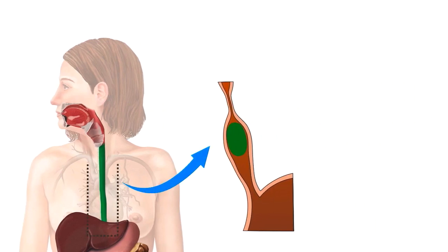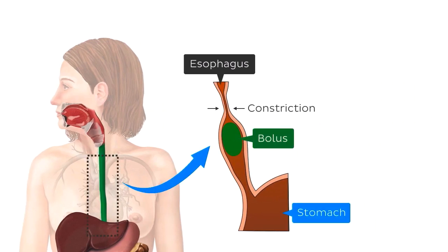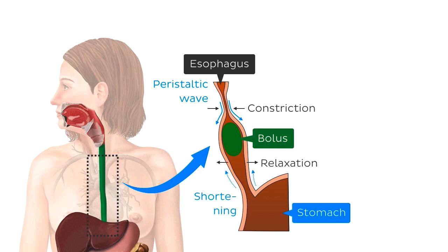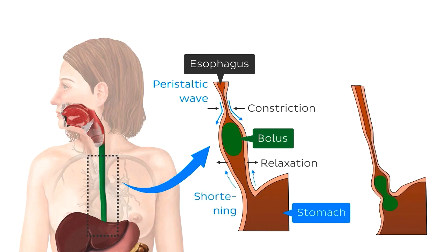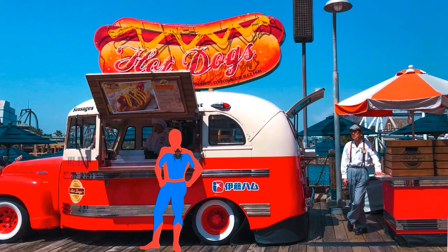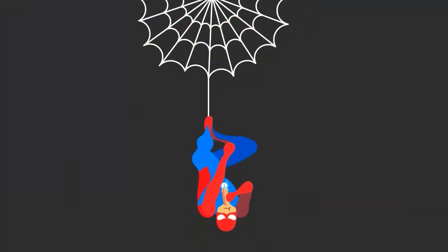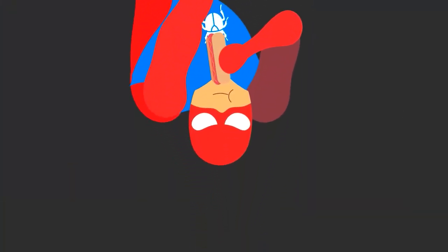Behind its somewhat ordinary facade, it's actually got quite a complex make-up. When we swallow food, it doesn't just simply fall down into our stomach — our esophagus actually pushes it down. Even if we were to eat upside down, our esophagus always ensures our lunch makes it to where it needs to go.